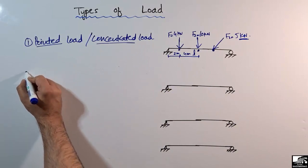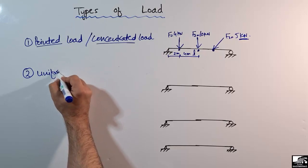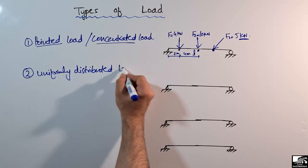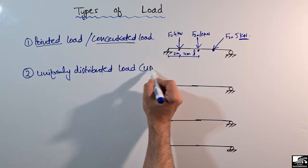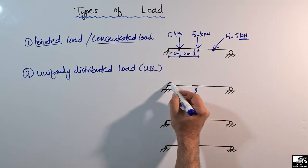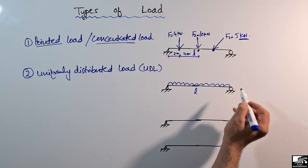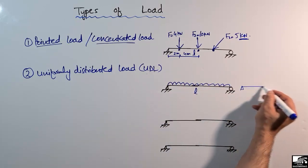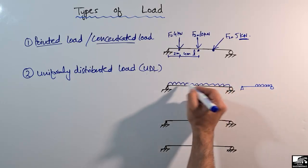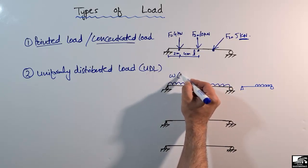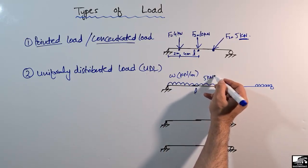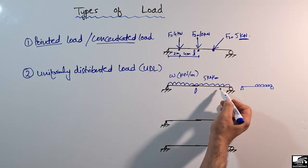The second type of load acting on the beam is the uniformly distributed load, or simply UDL. This load is always distributed over the whole length of the beam, or may be distributed over only part of the beam. This load is generally represented by W and will always have the unit of kilonewton per meter — for example, 5 kilonewton per meter.